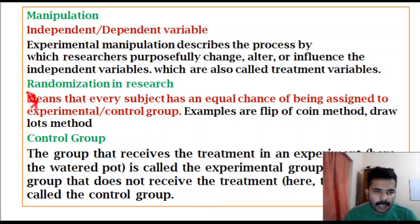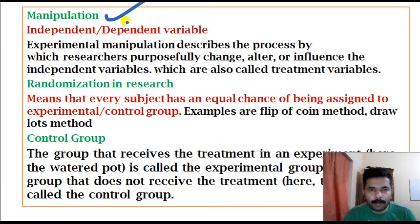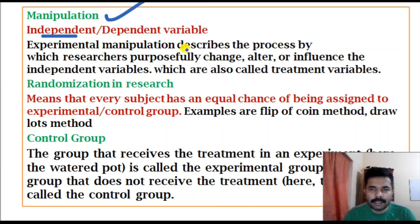In experimental research, we can measure three things: manipulation, randomization, and control group. Manipulation describes the process by which researchers purposefully change, alter, or influence the independent variables, which are also called treatment variables. For example, muscle relaxation exercise is the independent variable.